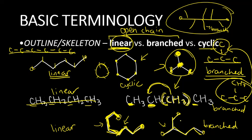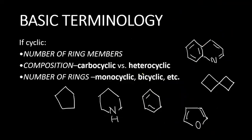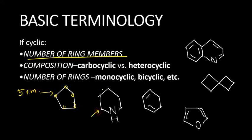I hope that clarifies linear versus branch. For cyclic, we have additional things to deal with because there are a lot of terms. This might be daunting at first, but the good part is it's not that difficult. First, in terms of number of ring members, it's just how many atoms are there in the ring — like how many points are there in a polygon. How many points in a square? Four. How many points in a pentagon? Five. How many points are there in this pentagon? Five, so this has five ring members. This looks like a hexagon — that's six ring members. Do we include nitrogen? Of course, that's part of the ring.